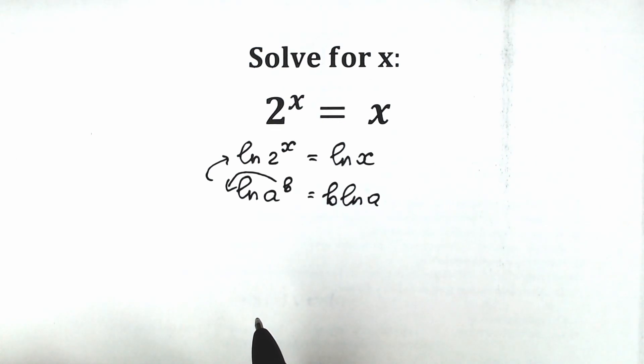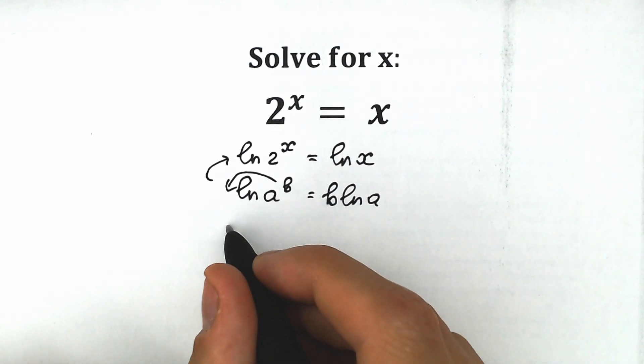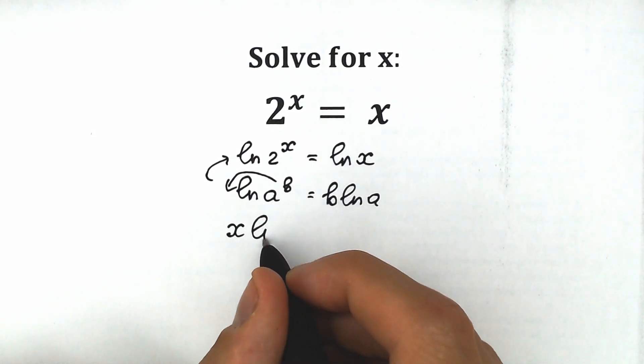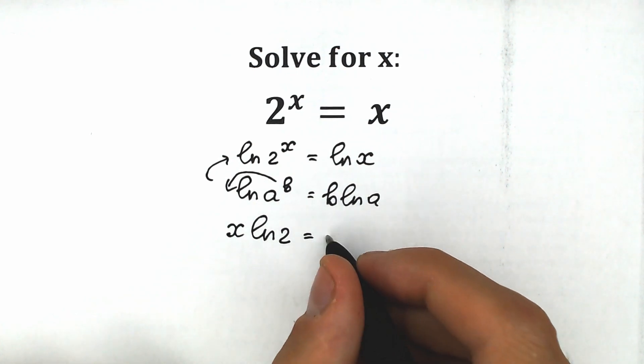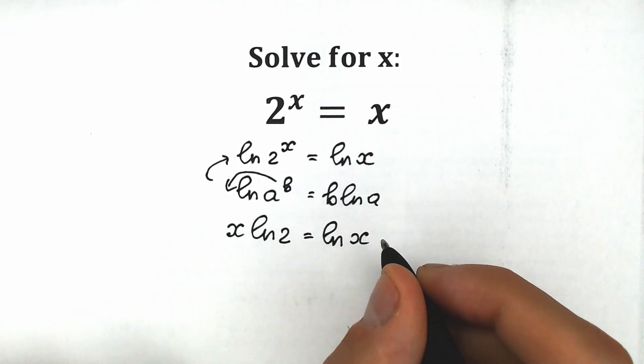So as a result, what do we have right here? We will have x times natural log 2 equal to natural log x.